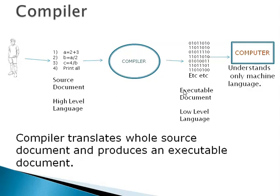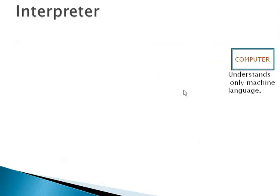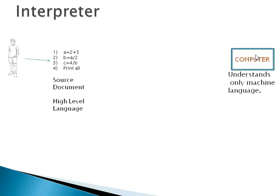Let us look at another scenario. In this scenario again, we know that a computer understands only machine language, and a human can issue instructions only in English coupled with mathematical equations and symbols. We have seen that this is called source document or a high-level language. Whatever computer receives is low-level language.